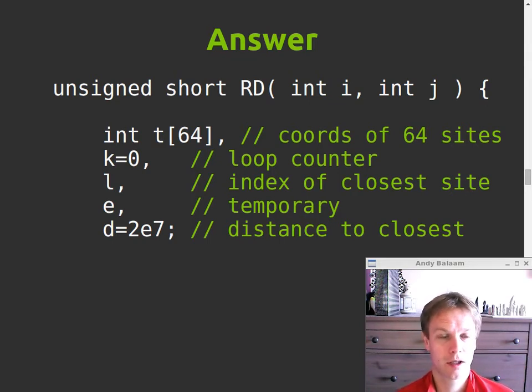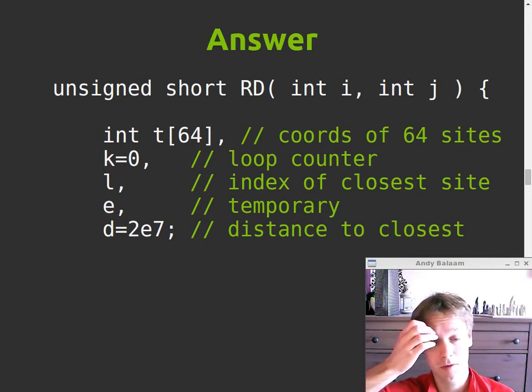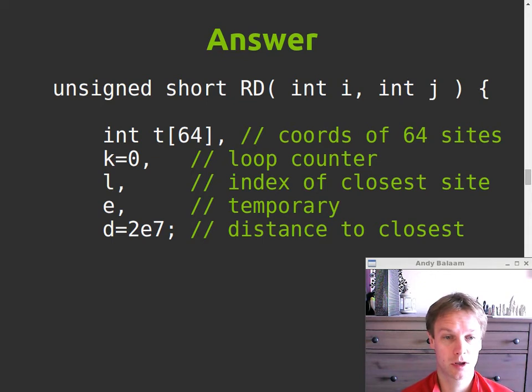Then we declare k and set it to 0, that's going to be our loop count of the loop we're going to have. Then l is the site that we've chosen. So this is remember, we're doing one pixel here, we've got an x and y coordinate given in. So we have to find out, in order to draw this Voronoi diagram, we have to find out which site is closest to us. So l will be between 0 and 63 to say which one of the t's is the site we've currently chosen. E is going to be used as a temporary variable. And d is the distance to whichever site is currently closest. So at the moment that's been set to a very large number, so that any distance we then measure is going to be less than that.